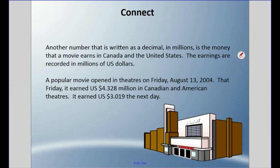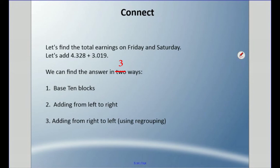A number written as a decimal in millions is the money that a movie earns in Canada and the United States, recorded in millions of US dollars. You would see movies reported how much they made on the weekend — five point two six million dollars or whatever. A popular movie opened in theaters on Friday, August 13th, 2004. That Friday it earned four and three hundred twenty-eight thousandths of a million in Canadian and American theaters. It earned three and nineteen thousandths of a million dollars the next day.